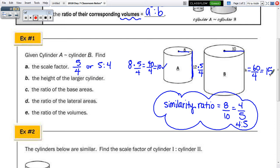So the height of the larger cylinder is 15 units. The ratio of the base areas, so remember, that's the square of the ratio, so 4 squared to 5 squared, which is 16 to 25. And the ratio of the lateral area, any area, remember, is the same. This is also 16 to 25. And the ratio of the volume would be 4 cubed, which is 64 to 125.